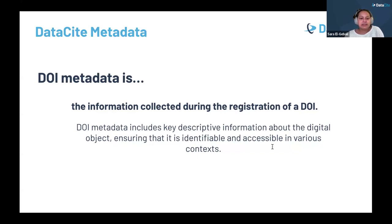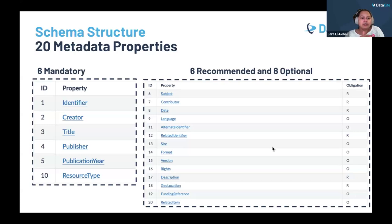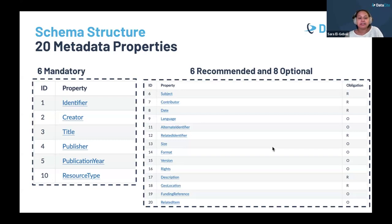The Datasite metadata schema is specifically designed for Datasite DOIs. It is organized into 20 metadata properties categorized into three groups: mandatory properties that represent the minimum information required for a DOI; six recommended properties that should be included whenever possible to provide richer description; and eight optional properties which may not always apply but can really enhance metadata quality whenever available.